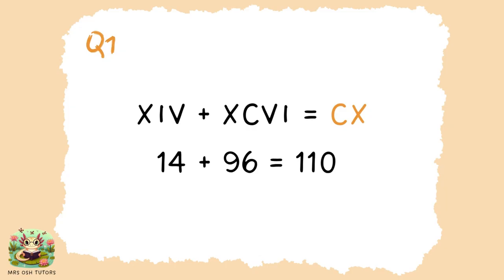Question one. The first number: X represents 10, and then we have I before V. I before V means one less than 5, which is 4. So 10 plus 4 is 14. The second number: X is of a smaller value than C because X is worth 10 and C is worth 100. In Roman numerals, when the smaller value comes before, we subtract that amount. So we have 10 less than 100, which is 90. Then we have VI, which is one more than 5, which is 6 — making 96 altogether. Then you can add 14 and 96, which makes 110, and put that back into Roman numerals. The X would come after the C because it's 10 more than 100.